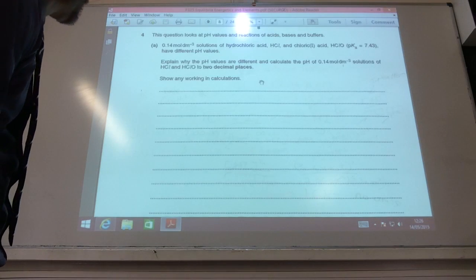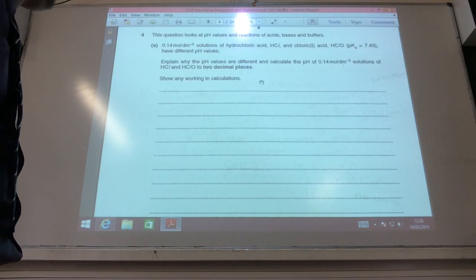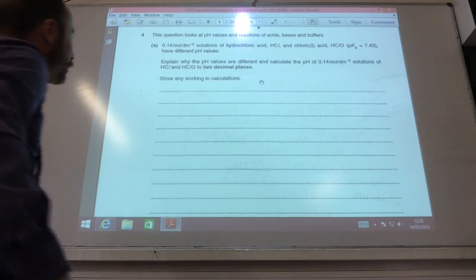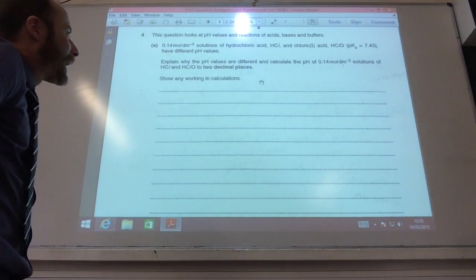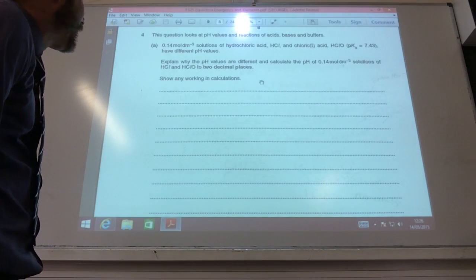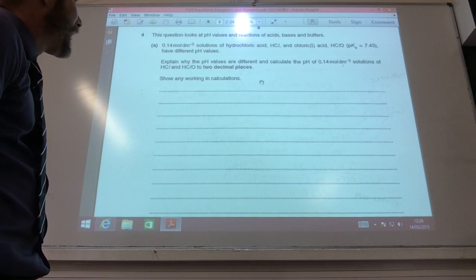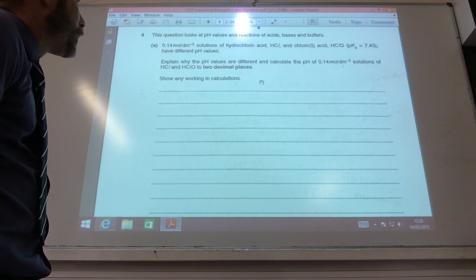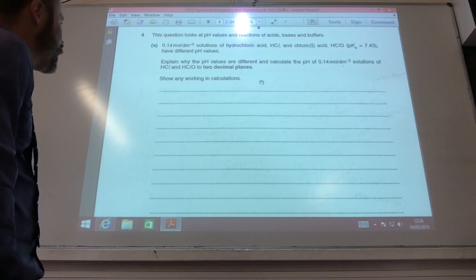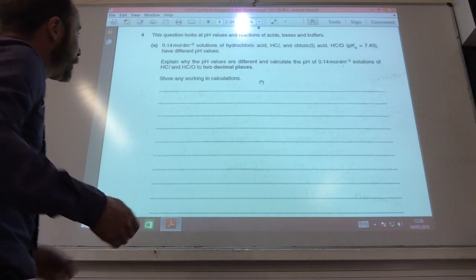Okay, here we go on question 4 and we're going to look at some pH now. So we've got hydrochloric acid and we've got chloric 1 acid and it's giving me the pKa of that one. Why the value is different and I need to calculate the pH of 0.14 moles per decimeter cubed solutions to 2 decimal places.